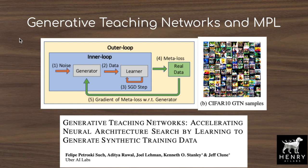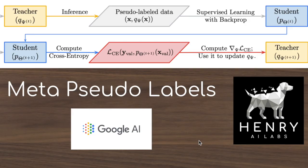MetaPseudoLabels is a compelling meta-learning algorithm that adapts the target distribution for the student network throughout training to maximize held-out validation accuracy. It uses a gradient-through-gradient teacher-student paradigm where the teacher optimizes the target distribution component of supervised learning, and both models co-evolve in a dual optimization framework. This achieves high ImageNet accuracy with full plus extra unlabeled data, and strong performance in limited data settings. Thanks for watching — please subscribe to Henry AI Labs for more deep learning and AI videos.